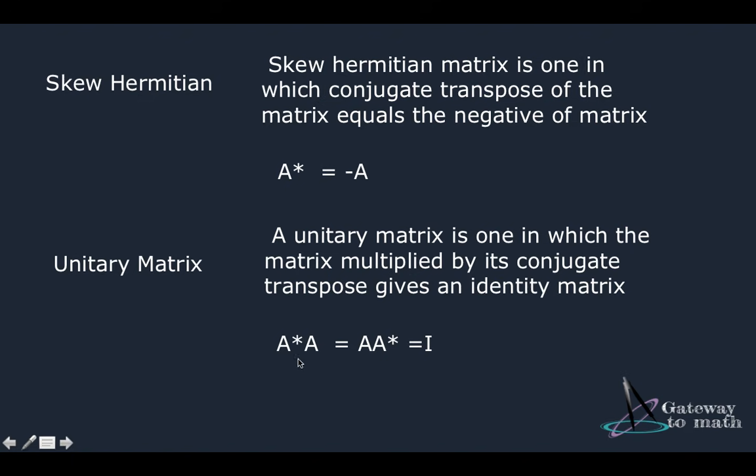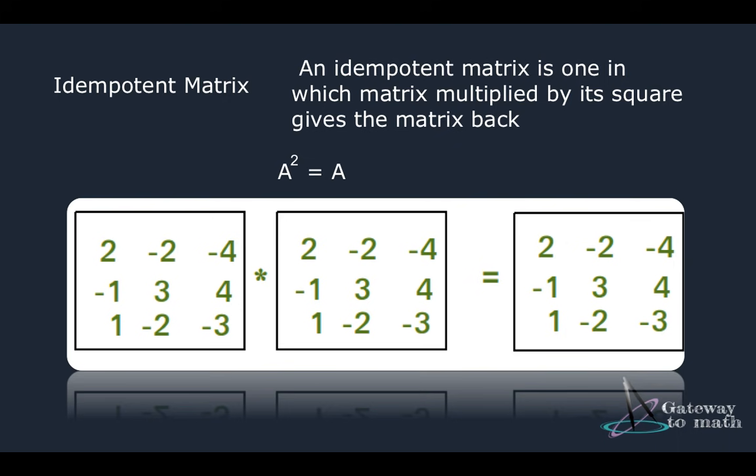A unitary matrix is one in which when you again commute it on the left and the right, it gives you an identity matrix again. An idempotent matrix is one in which when you square the matrix, you still get the original matrix back. So I have two matrices same and then when I square them, I actually get my original matrix back.